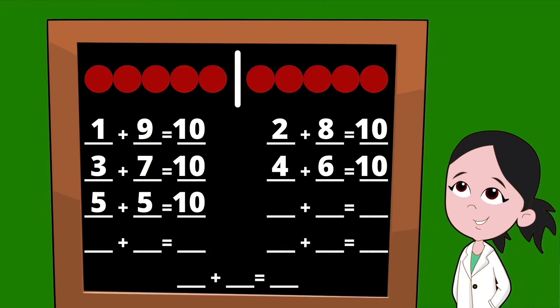Let's go ahead and slide that line over once again to get our next set of partners. Can you count the dots to the left of our line? How many dots did you find? Yep, there are six dots, so our first partner is the number six. To the right of our line, there are four dots, so our second partner is the number four. Six plus four equals 10.